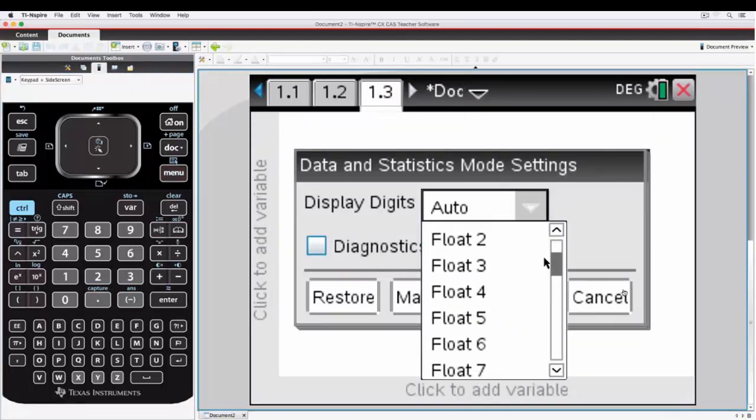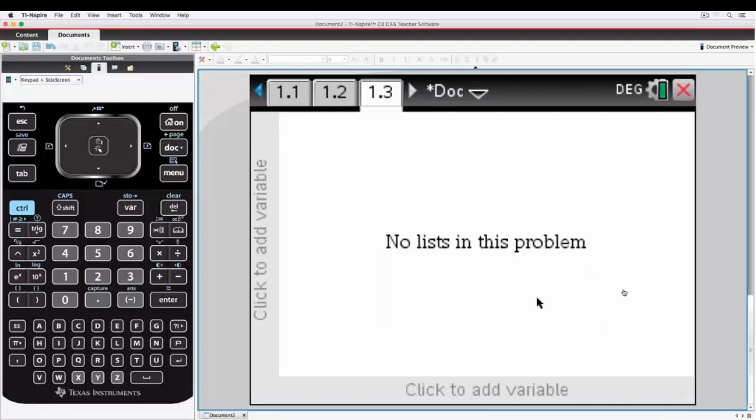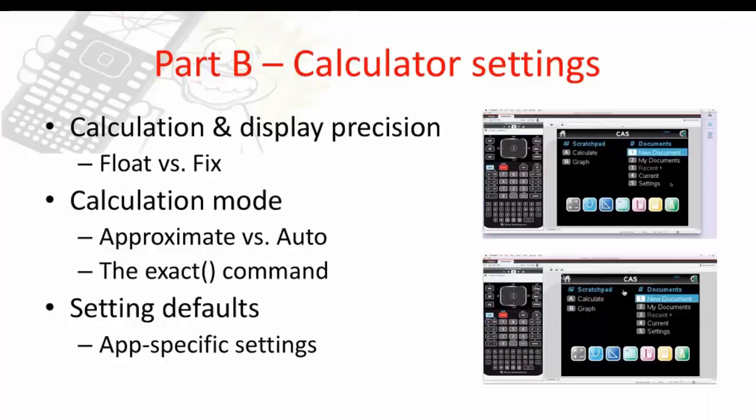For example, showing the regression equation, and you might choose that Float 3 or Float 4 is enough precision to display regression equations, but that's only within the app of the data.